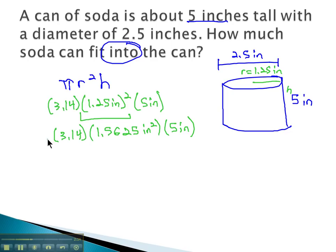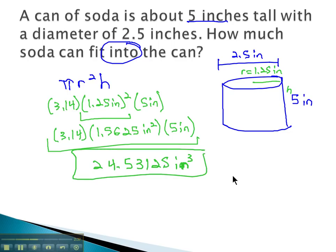Since we're using our calculator, let's just multiply straight across. 3.14 times 1.5625 square inches times 5, keep multiplying across, and we end up with 24.53125 cubic inches filling up our soda can.